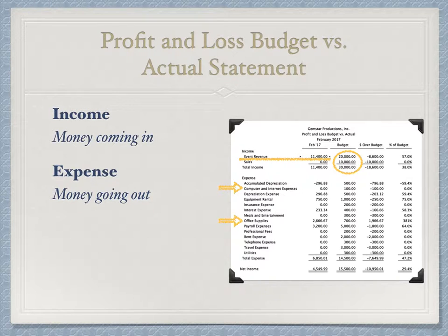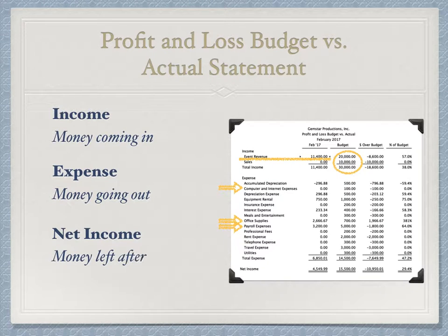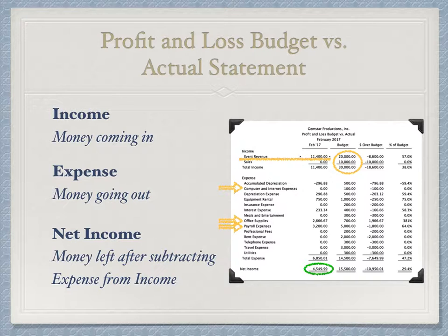The office supplies account shows a value of $2,666.67, but that purchase was for a three-month supply and we budgeted the monthly value at $700, so you see a big difference in the numbers there. The payroll expense account has a difference of $1,800, due to Gemstar being a new company and not being fully staffed yet. Those numbers will also change over the first quarter. Most importantly, our profit and loss budget versus actual shows that Gemstar's net income for the first month is $549.99, which is great because we made money and didn't come out in the negative. Almost everything came out under budget, which is positive because it's better to have more money than not enough.